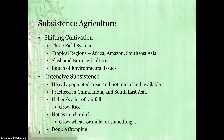Our second type is intensive subsistence. This is characterized in locations where it's heavily populated and there's not much land available. Places that fit this description are China, India, and Southeast Asia. If there's a lot of rainfall, you'll almost always see wet rice dominant there. When there's not as much rain, you'll see other grains such as wheat, millet, and some other grains. In intensive subsistence, you can see the process of double cropping, which is basically having multiple crops on a singular field in order to create diversity and avoid the whole monoculture system.